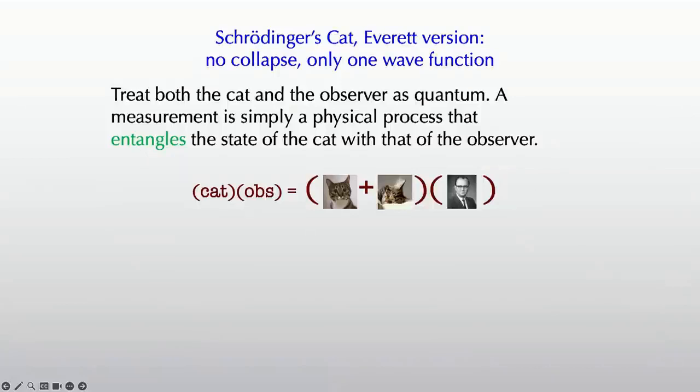Therefore I should put parentheses around you and treat you, the observer, as if you have a wave function. What is going to happen to you? Solve the Schrödinger equation. That's all you have to do. And happily, in this case, it's actually pretty easy to do that.